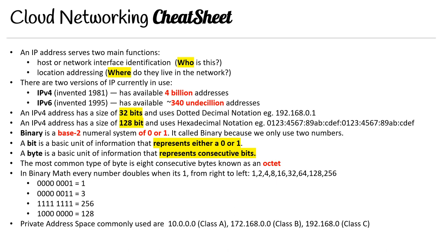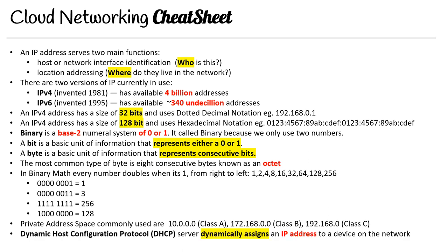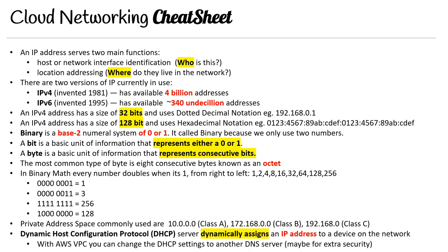Commonly used private address spaces are 10.0.0.0 Class A, 172.168.0.0 Class B, and 192.168.0.0 Class C. You can use whatever you want when making your VPCs, though some people might think that the particular number used indicates the size of the network. Then we have Dynamic Host Configuration Protocol, DHCP, which dynamically assigns an IP address to a device on the network. Within AWS VPC, you're able to change the DHCP settings to another DNS server — you might want to do this for security purposes, like routing through a server with filtration options.